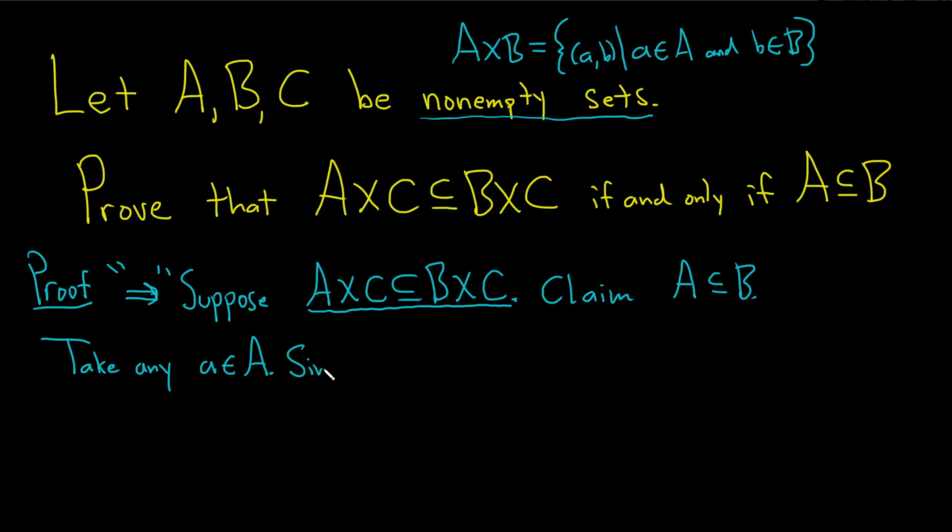Since C is not empty there exists some little c in capital C. So thus A comma C is in A cross C right because A is in A and C is in C.